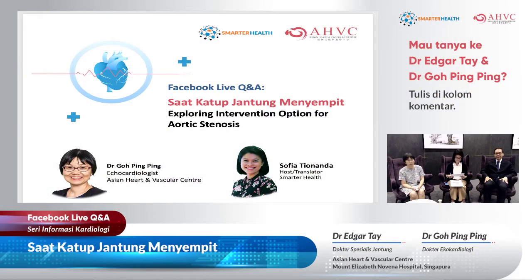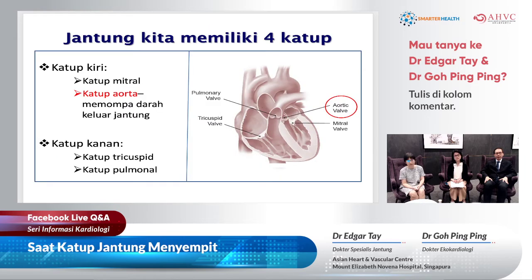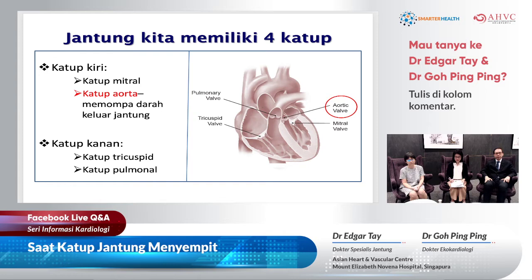The first part of our session will cover what is special about Aortic Stenosis, how it presents in patients, and how we diagnose it. We will learn together what Aortic Stenosis is, how it can occur, and how we diagnose it. Our heart has four valves or doors — two valves on the left side and two valves on the right side. This evening, the valve we want to concentrate on is the Aortic valve, which is the one through which blood gets pumped out of the heart to the rest of the body. It is a very important valve.